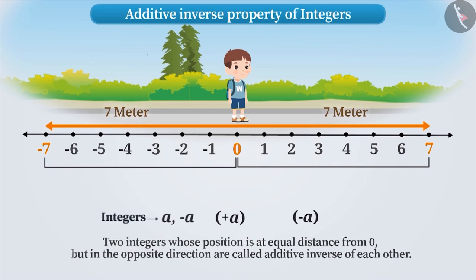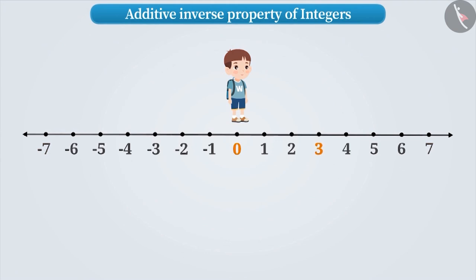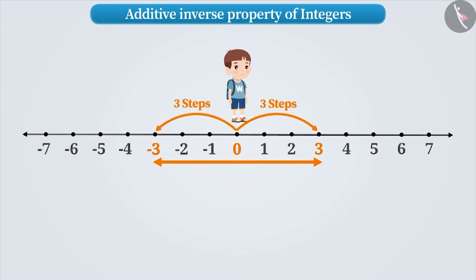Any two integers whose position is at equal distance from 0, but in opposite direction, are called additive inverse of each other. Similarly, 3 is to the right side of 0, and minus 3 is to the left side of 0. The distance from 0 to both numbers is equal. Therefore, 3 and minus 3 are the additive inverse of each other.